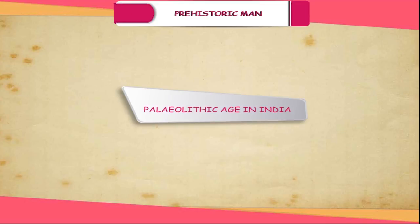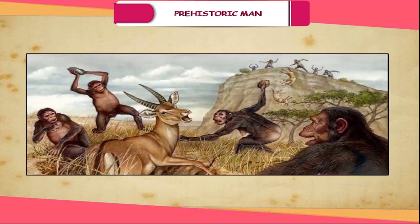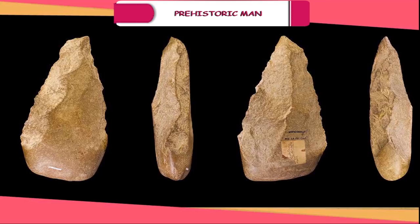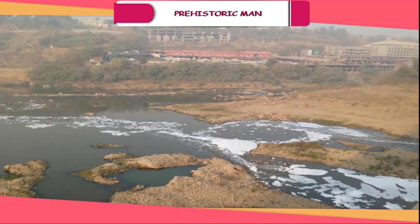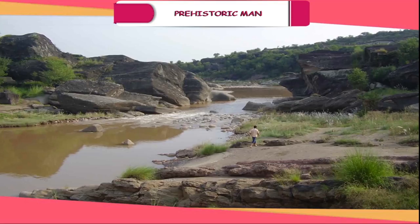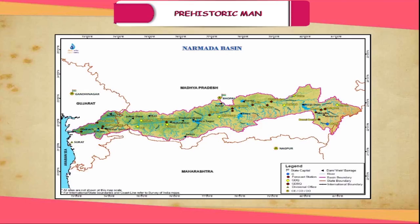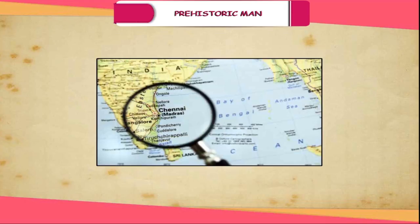Paleolithic age in India: About 2 million years ago, man started using stone as a weapon to protect himself and to hunt animals. Paleolithic remains have been found in many parts of the world like France, Spain and China. On the Indian subcontinent, such remains have been found in the Son River Valley, Pakistan, in the Upper Narmada region, Bhimbetka in Madhya Pradesh, Nashik in Maharashtra, and near Chennai.